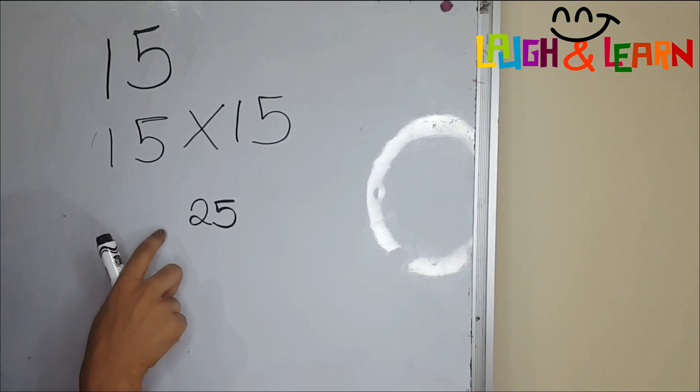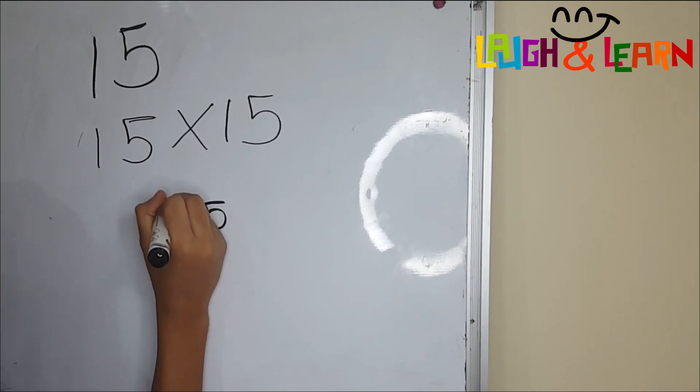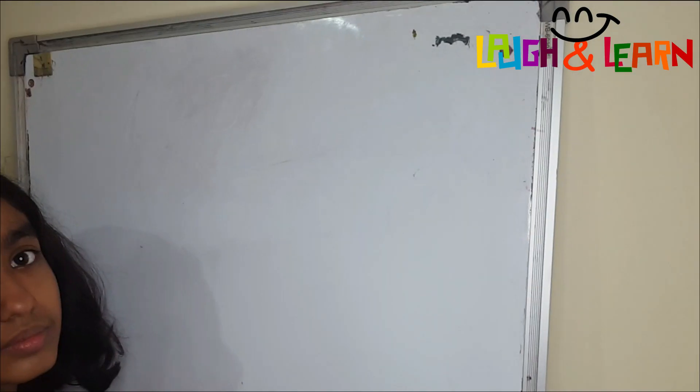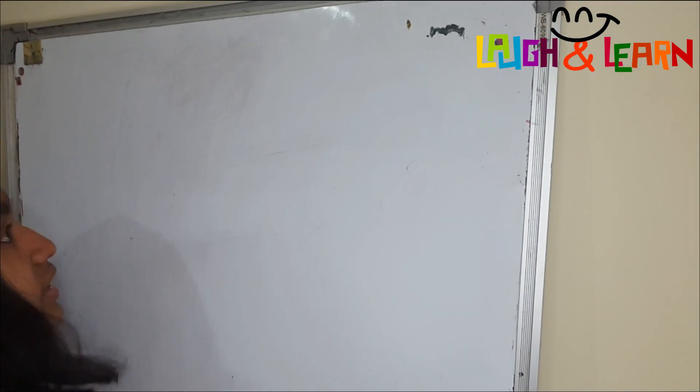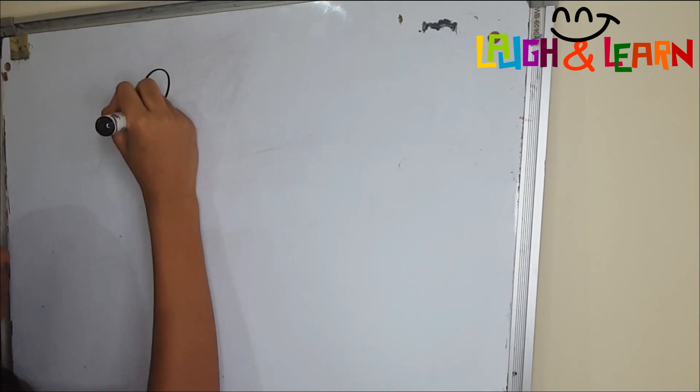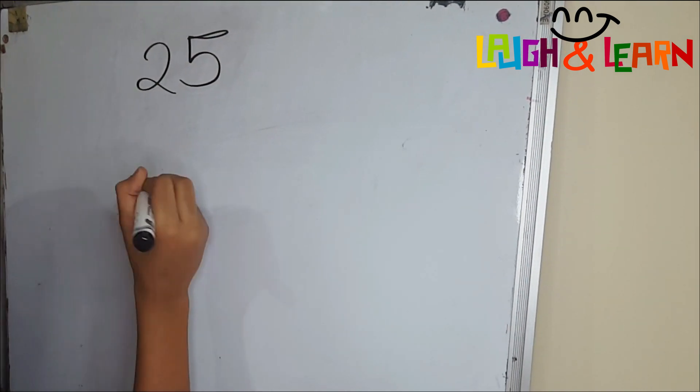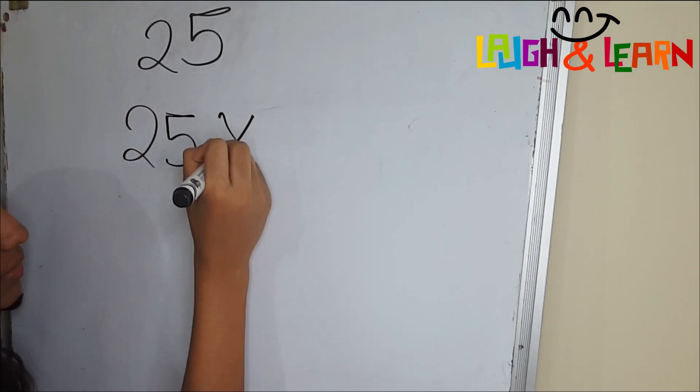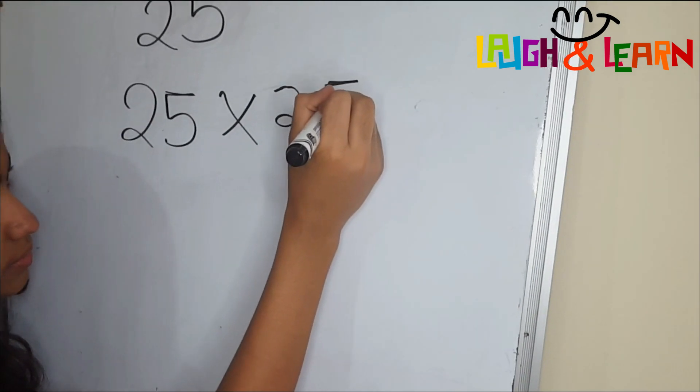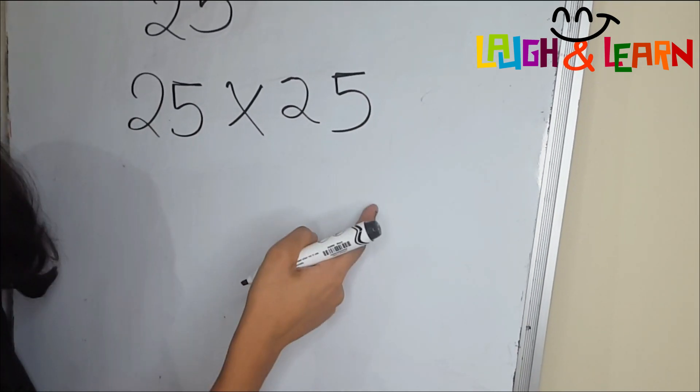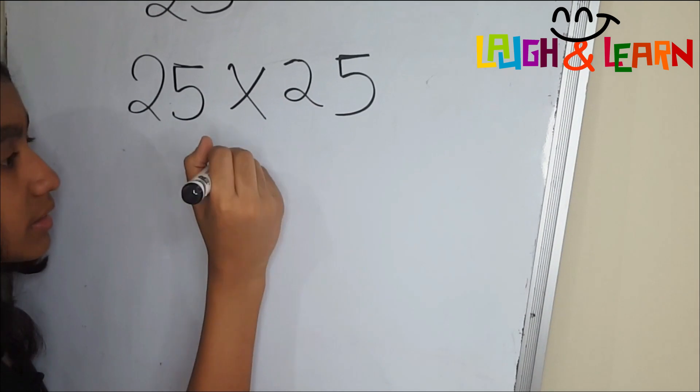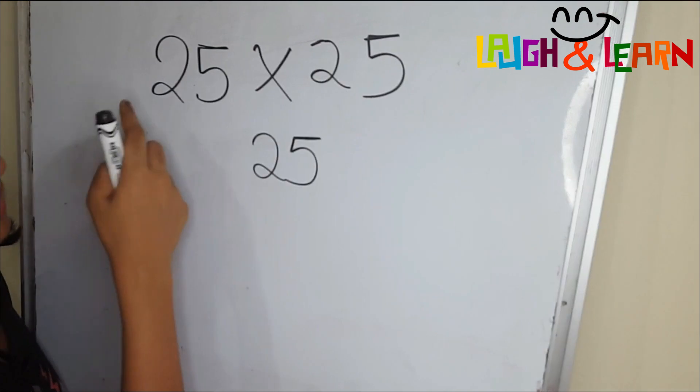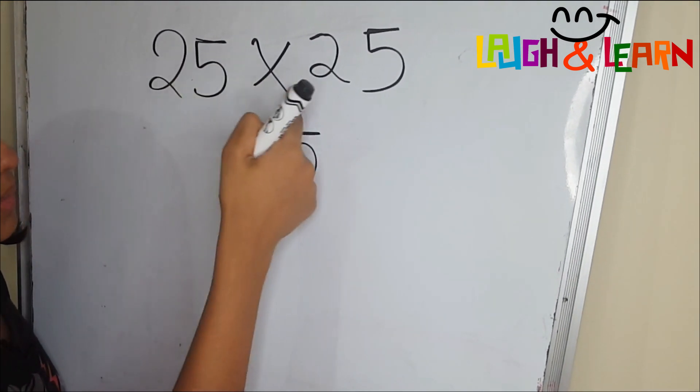...to 5. So now let's do 25. 25 multiplied by 25. All the time you have to do 5 times 5 and it always will be 25, then the next number is 3, 3 multiplied by 2.